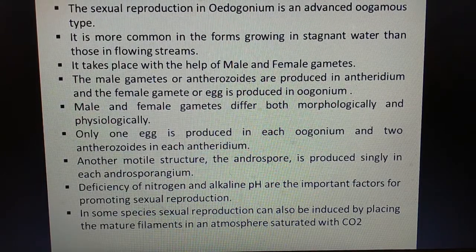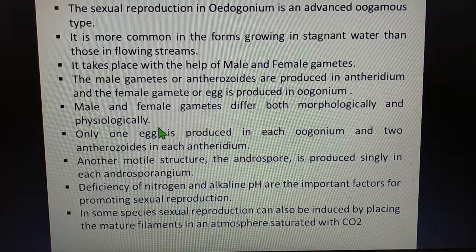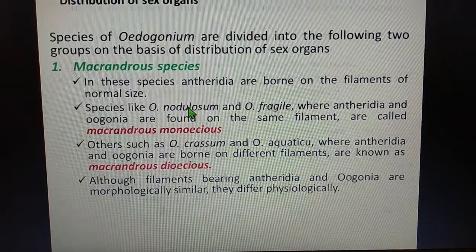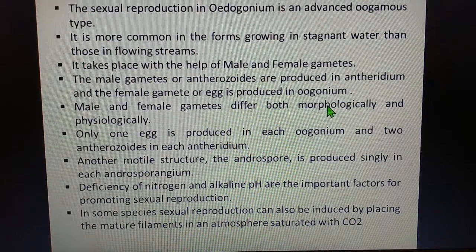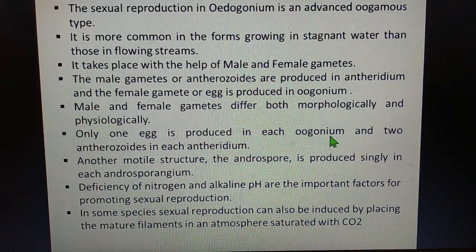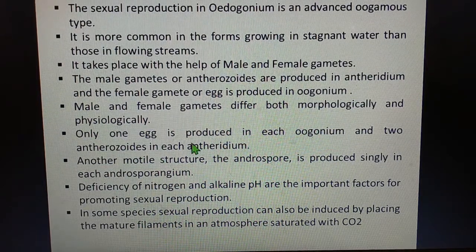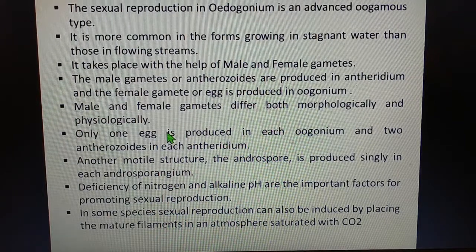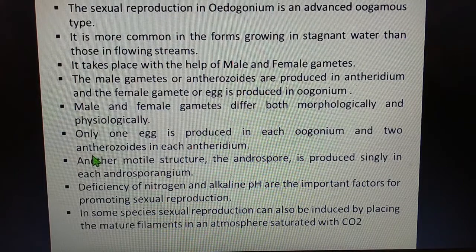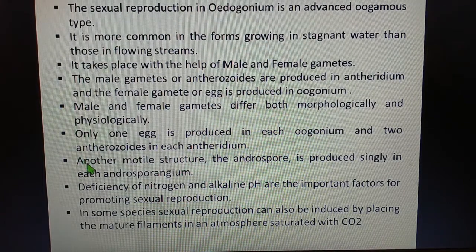The female gametes, also known as the egg, are produced in the oogonium, which is the female reproductive structure. Both the male and female gametes differ morphologically as well as physiologically. Only one egg is produced in each oogonium, whereas two antherozoids are formed in each antheridium.